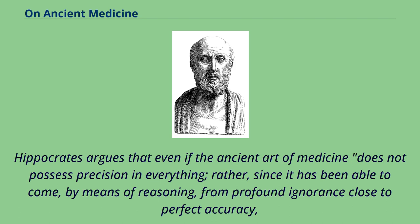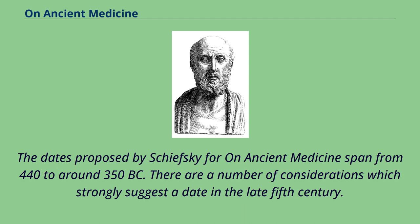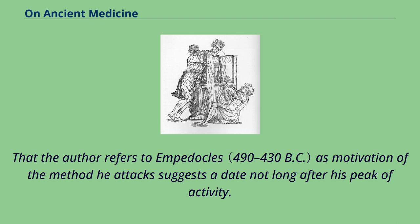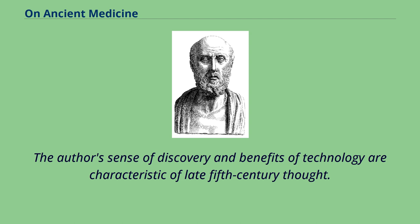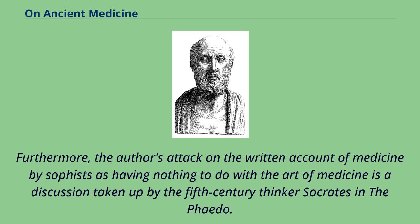Hippocrates argues that even if the ancient art of medicine does not possess precision in everything, since it has been able to come, by means of reasoning, from profound ignorance close to perfect accuracy, it is much more appropriate to marvel at its discoveries as having been made admirably, correctly, and not by chance. The dates proposed by Stjivsky for On Ancient Medicine span from 440 to around 350 BC, though a number of considerations strongly suggest a date in the late 5th century. The author refers to Empedocles as motivation for the method he attacks, suggesting a date not long after his peak of activity. The author's sense of discovery and benefits of technology are characteristic of late 5th century thought, and the idea that human beings through technology rose from savage behavior has parallels in Sophocles' 5th century work, Antigone. Furthermore, the author's attack on the written account of medicine by Sophists is a discussion taken up by the 5th century thinker Socrates in the Phaedo.